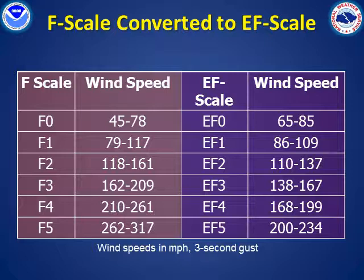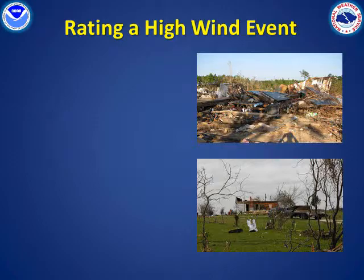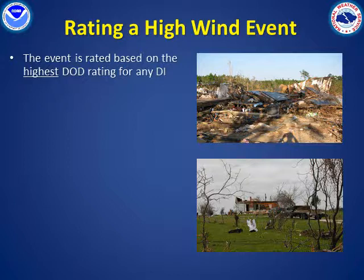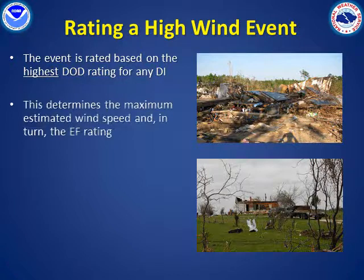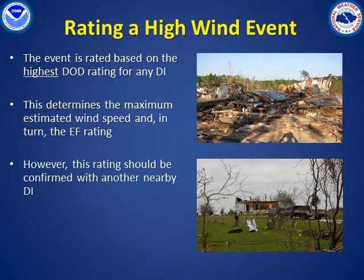Note that the EF scale wind speed ranges shown here are maximum 3-second gusts. The 3-second gust is thought to represent how the wind damages structures a little better than the fastest average sustained wind speed. To rate a tornado or a high wind event, the overall rating is based on the highest degree of damage rating for any damage indicator in the area. The damage indicator and degree of damage information is used to estimate a maximum wind gust speed, which in turn is used to determine the EF scale rating. However, there should be other nearby damage indicators to support this maximum rating, to help ensure that the construction of the structure which generated the maximum DOD is similar to that of the surrounding damage indicators.